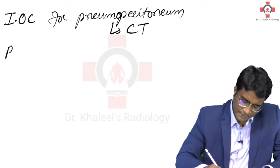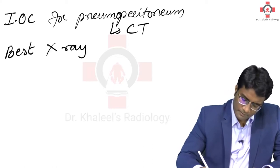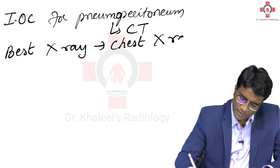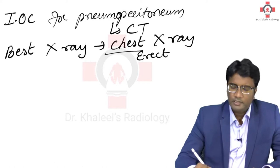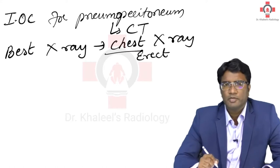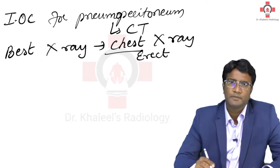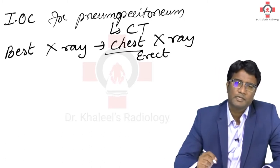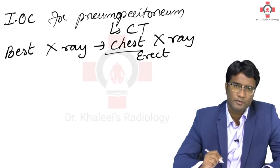The best X-ray view to look at pneumoperitoneum is a chest X-ray erect. Even for pneumoperitoneum you go for a chest X-ray erect. The important sign of pneumoperitoneum is air under the diaphragm. The domes of the diaphragm are best seen on a chest X-ray, and that is the reason we advise chest X-ray erect for a suspected case of hollow viscous perforation or pneumoperitoneum.